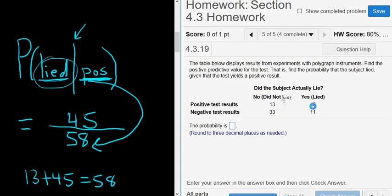So you only take the 45. You don't add up the 45 and the 11, right? Just from these positives, from this top row, you just take the 45. Those are the liars.